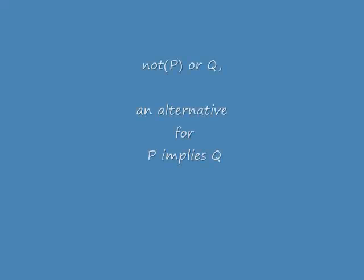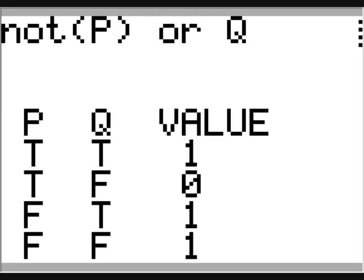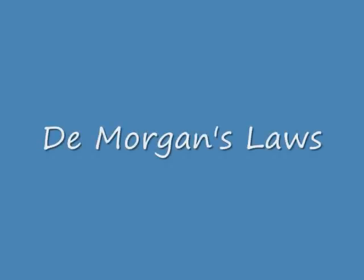Now let's do something more interesting. Remember, not P or Q is supposed to be the same as P implies Q. Let's try it out in the calculator. Here's what the truth table looks like. Notice it has the same truth values that P implies Q has.